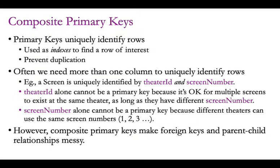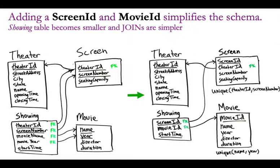Primary keys uniquely identify rows and are used as indexes to find the row of interest. If you're using a composite primary key, you need two columns to find the row of interest, and duplication is checked across the values of two columns. Composite primary keys make foreign keys and parent-child relationships kind of messy because you have more than one column involved. You could take this design and make it simpler by adding a screen ID and a movie ID to those tables. It's more complicated because you have an additional column, but the relationships are simpler because you only need one column in the showing table.